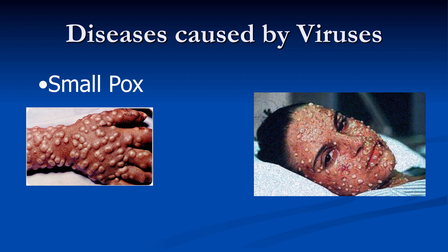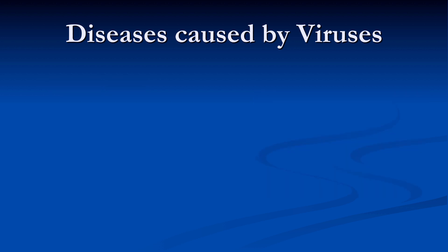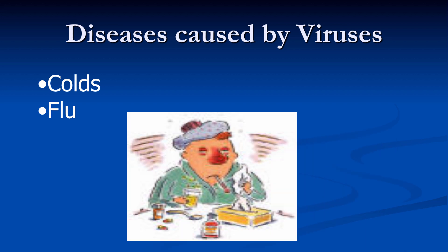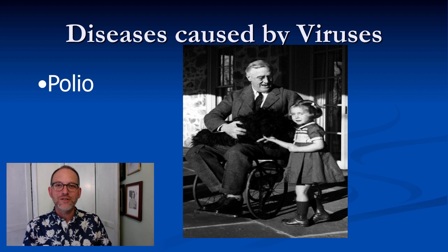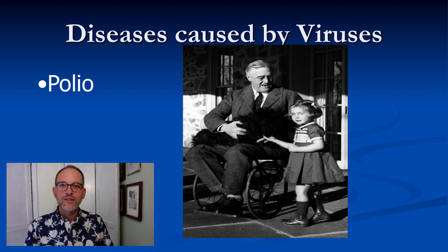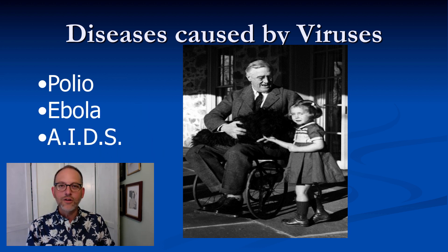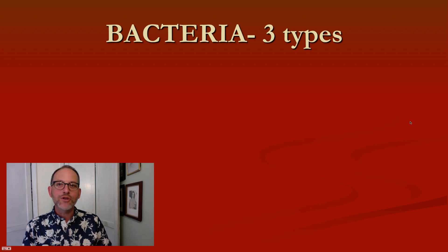Smallpox was what explorers brought from Europe to North America, killing millions of Native Americans who didn't have a natural resistance. Colds and flu are also viruses. Polio — one of our presidents came down with polio and became paralyzed from the waist down. See if you can name which president that is. Other diseases caused by viruses include Ebola and AIDS.